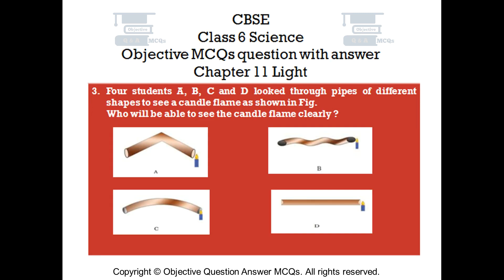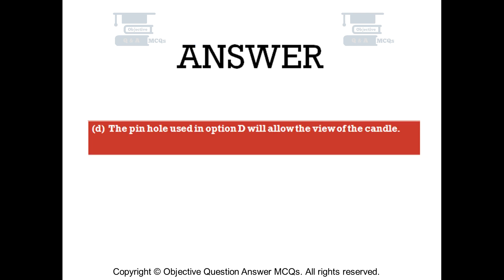Question number 3. Four students A, B, C and D looked through pipes of different shapes to see a candle flame as shown in the figure. Who will be able to see the candle flame clearly? Option A, Option B, Option C, Option D. The right answer is option D. The straight pipe used in option D will allow the view of the candle.